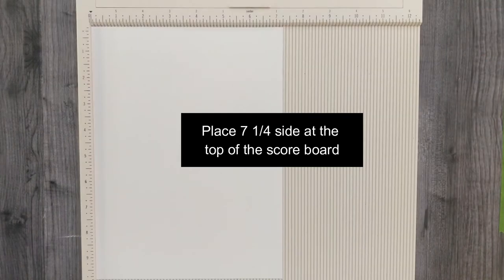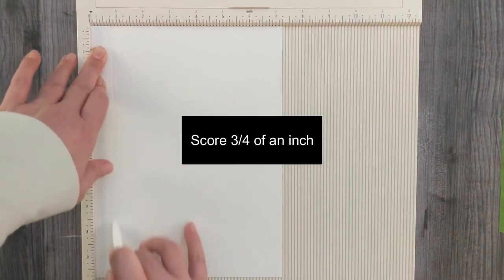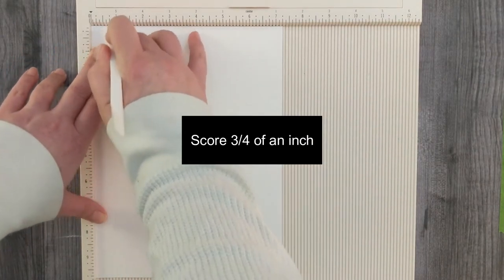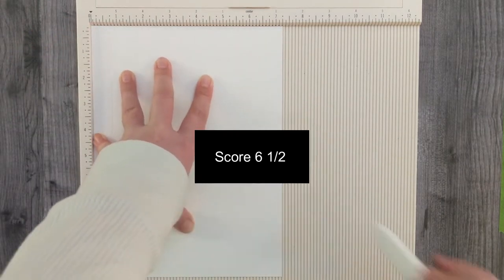Place the 7 1/4 inch side at the top of the scoreboard and score at 3 1/4 inch, and then score again at 6 1/2 inches.